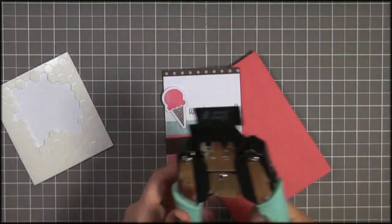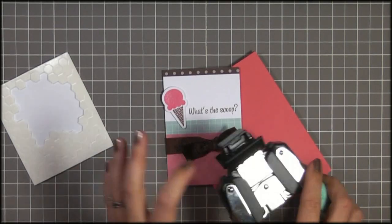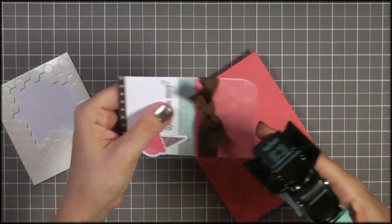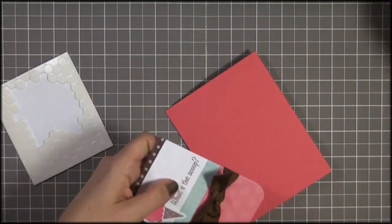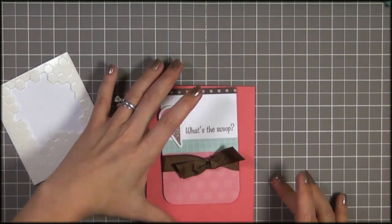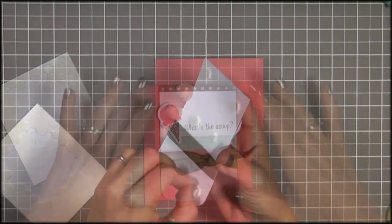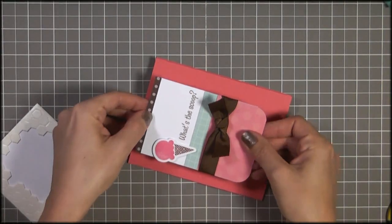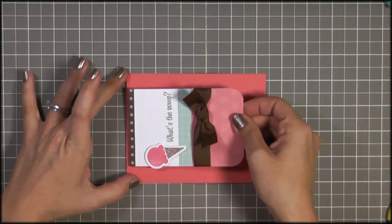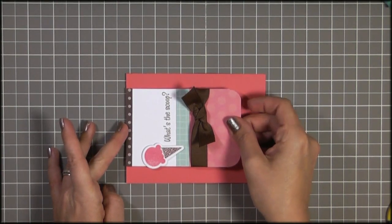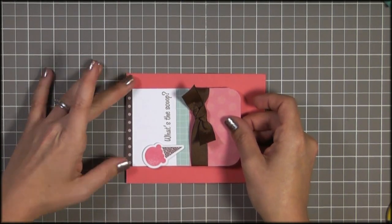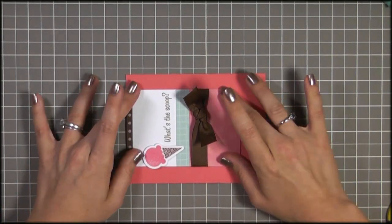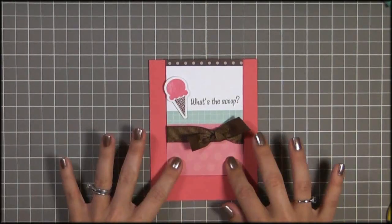I'm going to take my We Are Memory Keepers corner chomp. I'm around the bottom corners using the half inch side. And then I'm going to put this right here on the dimensional. Alright, now that I've got the dimensionals on, I'm just going to line this up in the center.